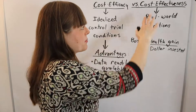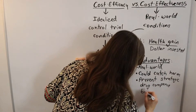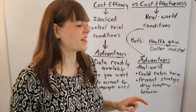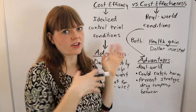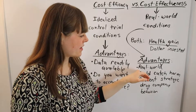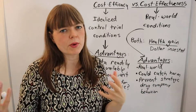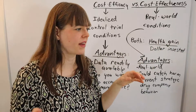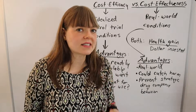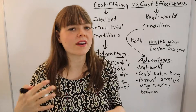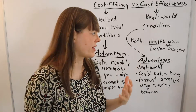But there are also reasons to prefer cost effectiveness. One obvious advantage is that it captures real world circumstances — how the medication or technology will actually play out. For example, what if 80% of people who get the drug become addicted to it, and that addiction, like the opioid epidemic, eventually causes loss of life and loss of health?